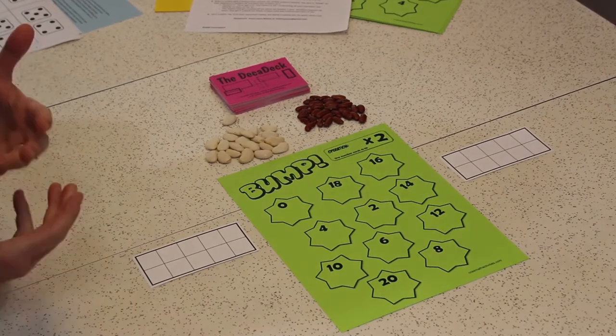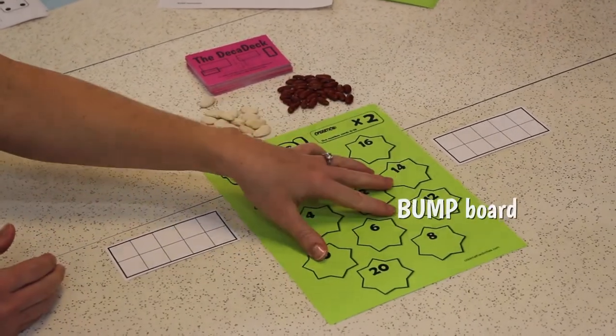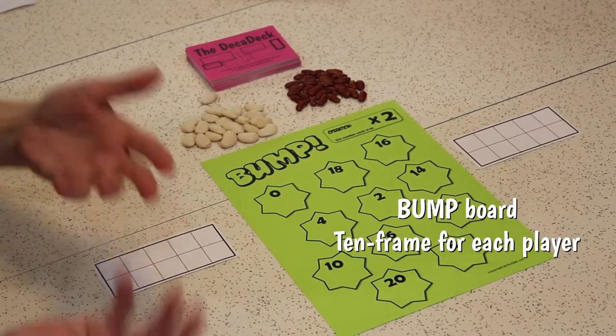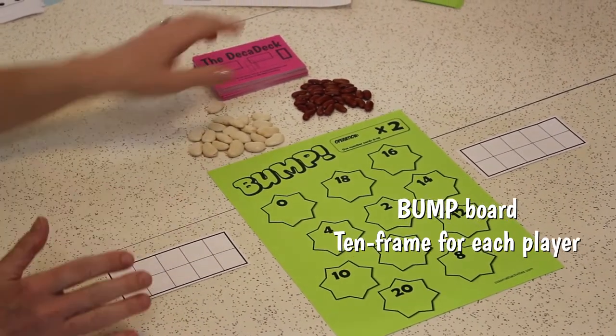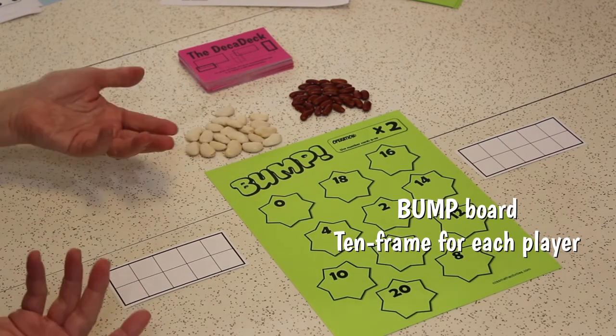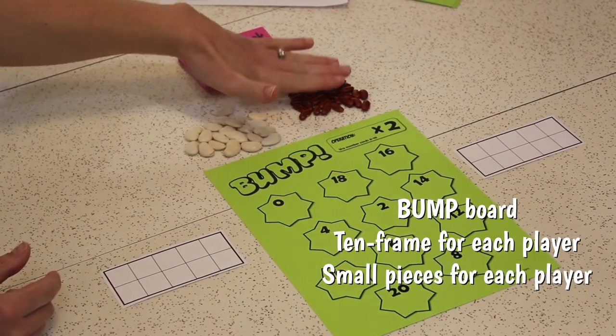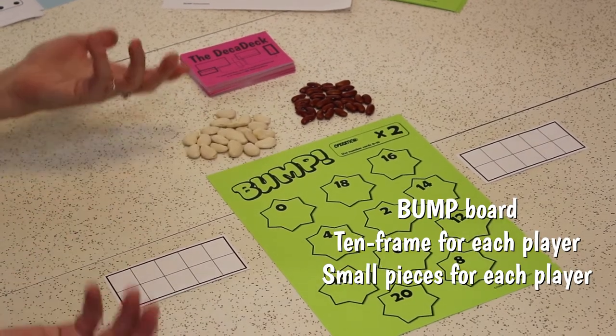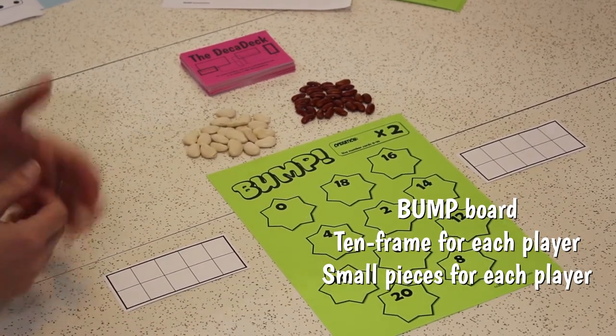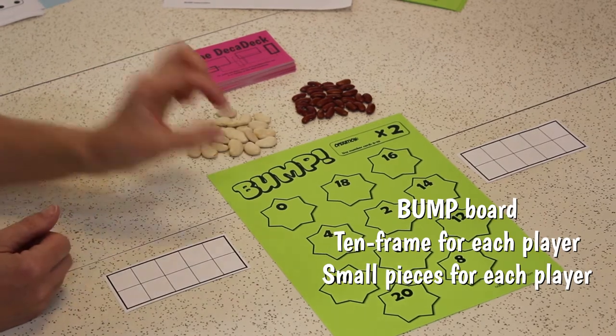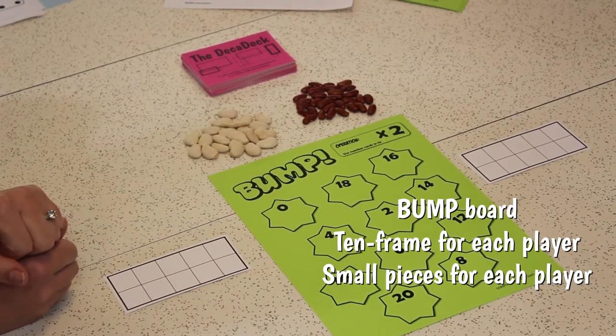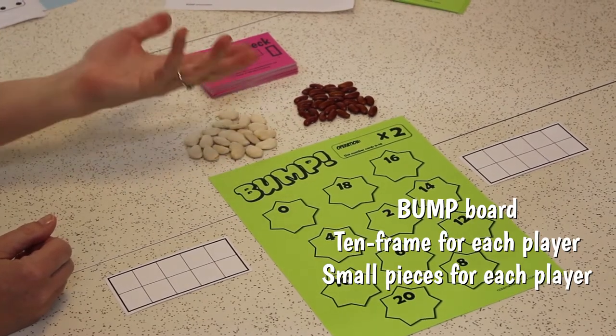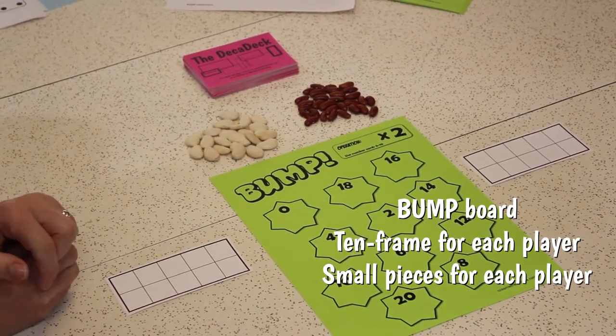All you need to do to play Bump is to have a Bump board, two blank 10 frames to keep score, and if you're playing with three people, you'd need three blank 10 frames. The other thing that you need to provide from home is some kind of marker for each person. We're using dried beans here, dried kidney beans and dried lima beans. If you have a third player, you just need another color marker. Pennies and dimes work, different colored Lego bricks work. As long as each person has their own pile of tiny things that are theirs, you can play this game. It's great with two or three people.